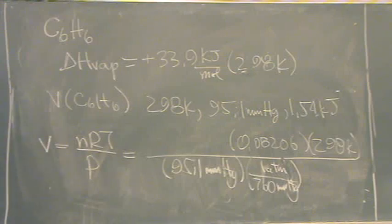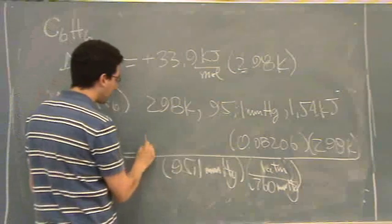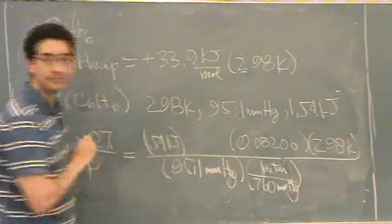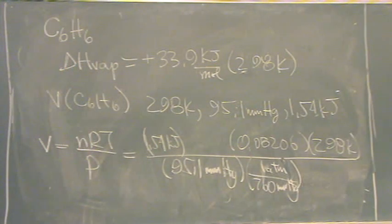And here's just a little funky. What they're saying is, you have 1.54 kilojoules. I'm going to convert that to moles given the delta H of vaporization.